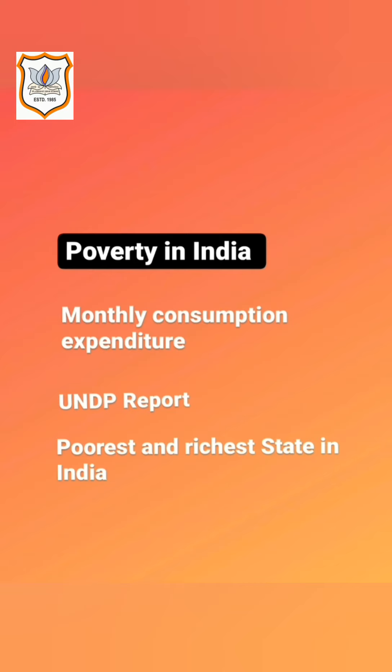Let's discuss some factual data related to poverty in India. The first data is related to monthly consumption expenditure. On the basis of monthly expenditure of Rs. 4,080 for a family in rural areas and Rs. 5,000 in urban areas, the poverty line was declared by the Planning Commission in 2011-12. Those families whose income was less were declared as Below Poverty Line or BPL families.